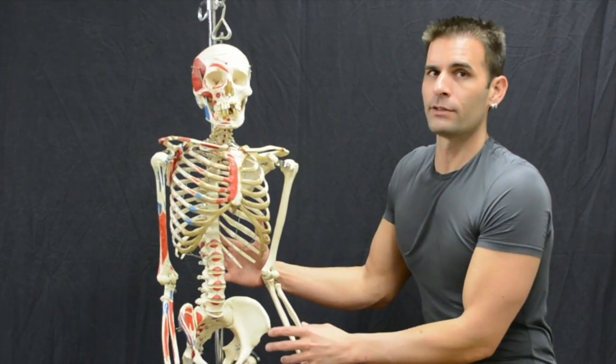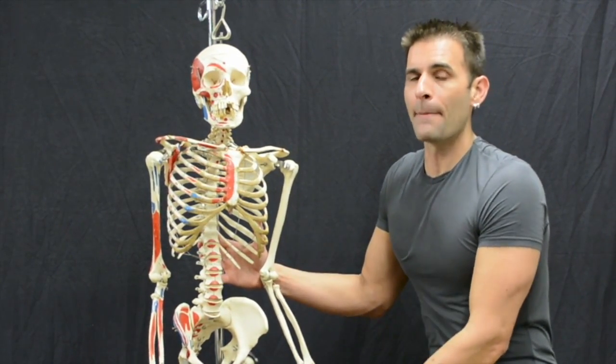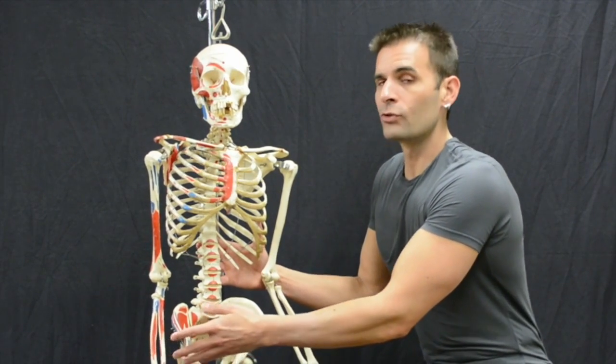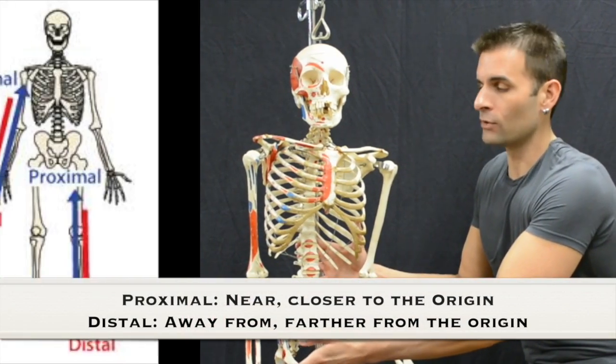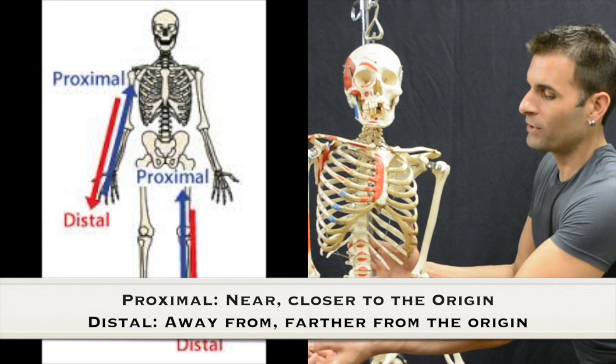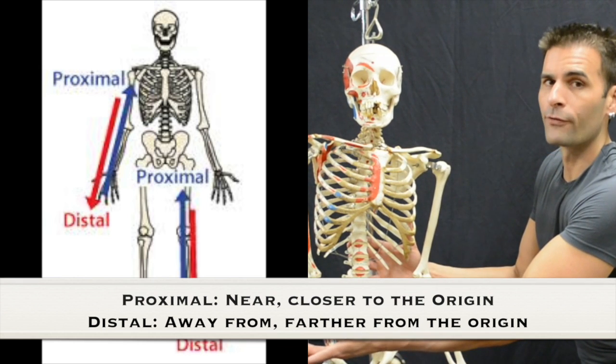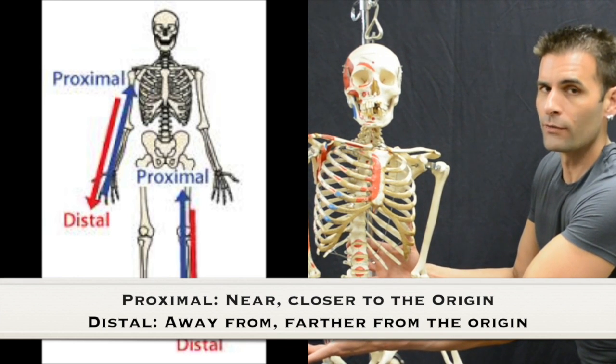This is all for the axial skeleton. When we talk about the appendicular skeleton, we use the words proximal and distal. When we say proximal and distal, we are referring to that limb's point of origin.